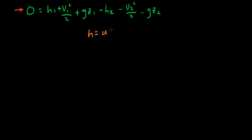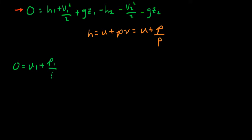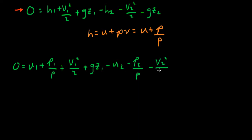Next, we substitute the definition for specific enthalpy H, which is equal to U plus PV, where V is the specific volume. Remember that the specific volume is just 1 divided by the density. Substituting, we have the specific internal energy at station 1 plus the pressure at station 1 divided by the density, plus the velocity at station 1 squared over 2, plus the acceleration due to gravity times the elevation at station 1, minus all of the same terms at station 2. For an incompressible substance with no heat transfer, the specific internal energies are equal and constant, and so they cancel.